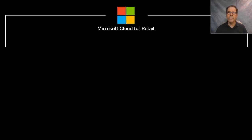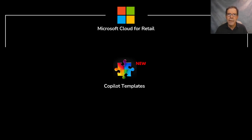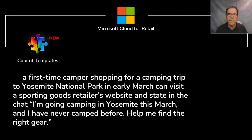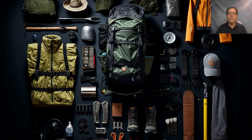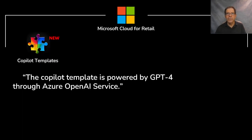A key announcement: new co-pilot templates. What these new templates do is enable end customers to learn about and see products by expressing what they're looking for using natural language. The example given in the press release was a first-time camper shopping for a camping trip to Yosemite National Park. He writes: 'I'm going camping in Yosemite this March and I've never camped before. Help me find the right gear.' We're told that shoppers would receive a response in natural language with recommendations for essentials, plus other suggestions.